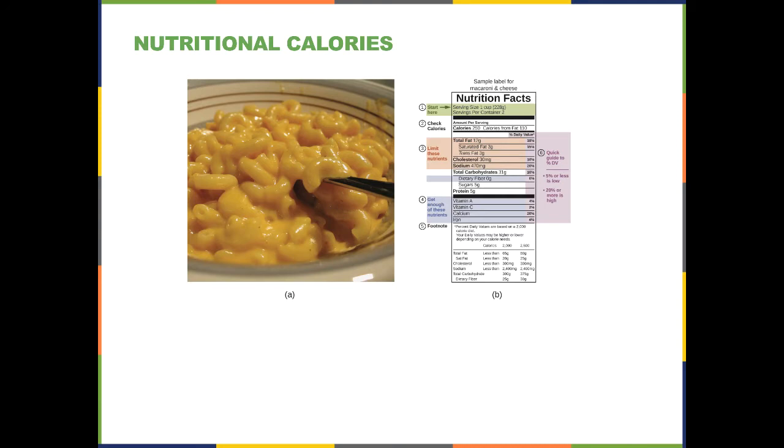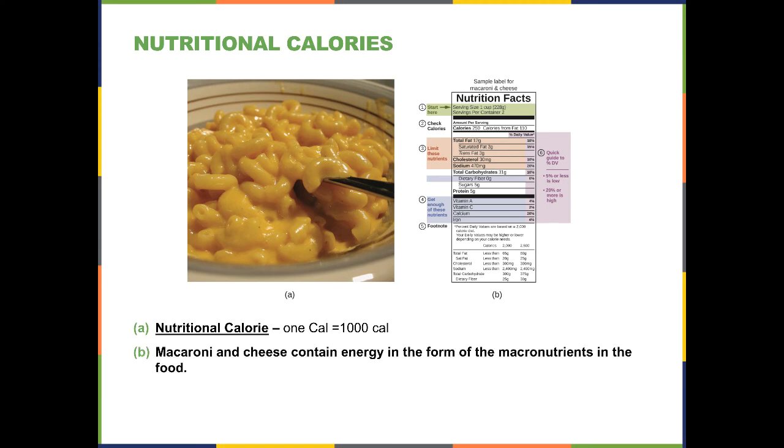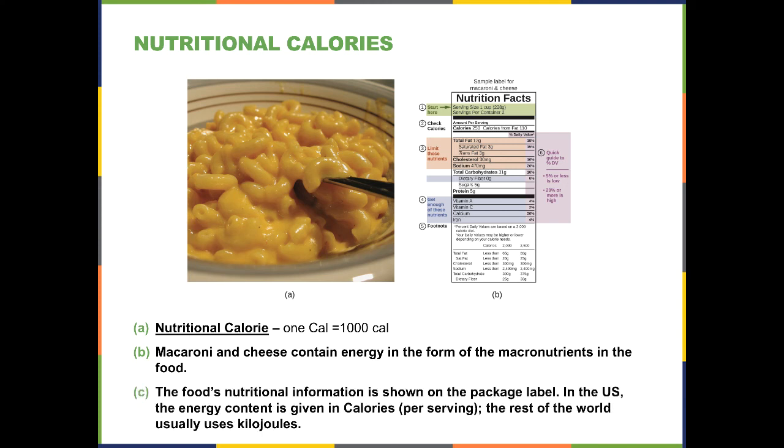Now nutritional calories are a little different. If you look on your labels or your food, you'll find that a serving has a certain number of nutritional calories. But a nutritional calorie, one capital C calorie, is equal to 1,000 little c calories. So one nutritional calorie is 1,000 regular calories. So macaroni and cheese here has all these various nutrients, but in a serving of one cup, it has 250 nutritional calories, which is 250,000 regular calories. This nutritional information is always contained on labels on the food.